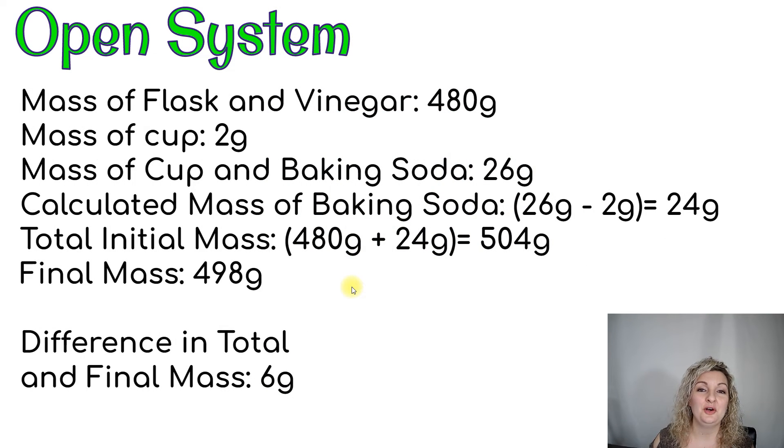All right, so let's go ahead and look at our open system. Here's all the measurements. You can see the mass of the flask and vinegar was 480 grams, the cup was 2 grams, the cup and the baking soda was 26 grams. Here's why I took those two measurements. We're going to calculate the mass of just the baking soda.